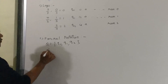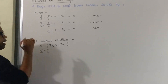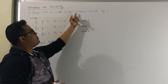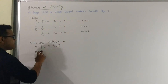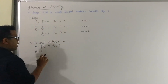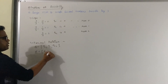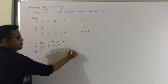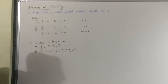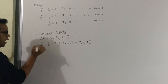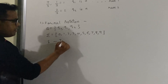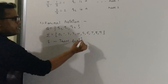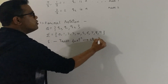The next formal notation is sigma. Sigma represents a set of input symbols. The input is a decimal number, so the symbols will be 0, 1, 2, 3, 4, 5, 6, 7, 8, and 9. The third formal notation is delta, which is the transition function. We are going to design the transition function in step number 3.